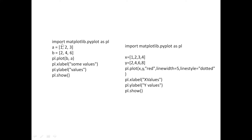Let's look at the code. First, we import matplotlib.pyplot as plt. Then we define variables: x = [1, 2, 3, 4] and y = [2, 4, 6, 8]. We call plt.plot(x, y) to plot the data.